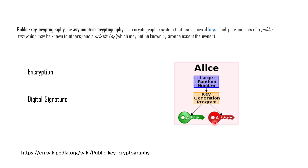In KMS, whenever you're creating an asymmetric key, you can either generate your own public or private key, or you can use GCP to generate these keys. Once you've created these two keys, you can use them in two distinct scenarios: one is for encryption and the other is for digital signature.